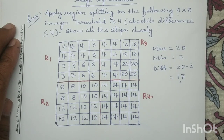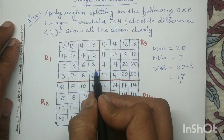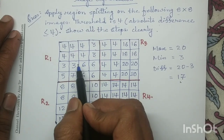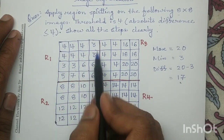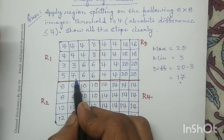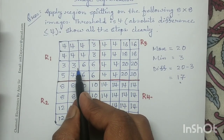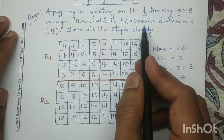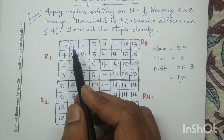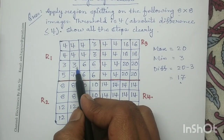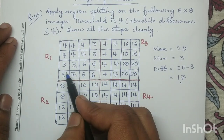Now we have to repeat the same splitting operation for sub-region R1. For R1, the maximum value is 6 and the minimum value is 3. So 6 minus 3 equals 4, and 4 is acceptable because the absolute difference is less than or equal to 4. So the condition is satisfied and we will not split region R1.